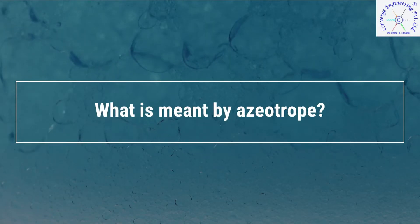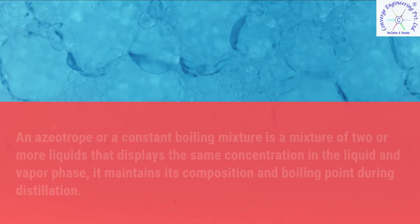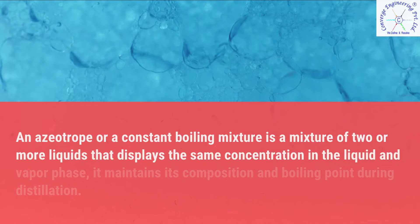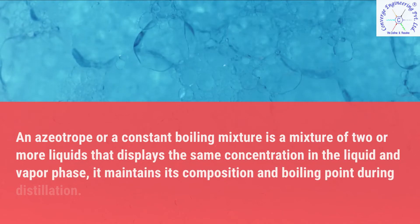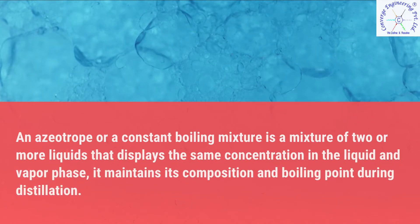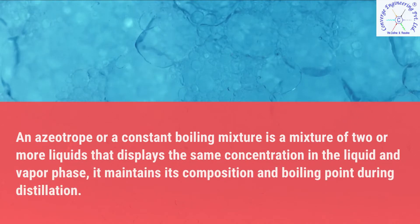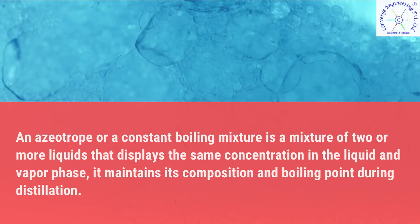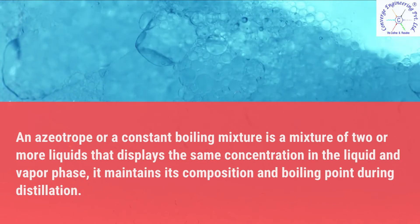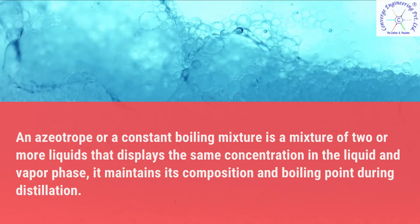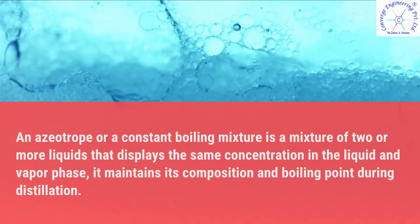What is meant by azeotrope? An azeotrope, or a constant boiling mixture, is a mixture of two or more liquids that displays the same concentration in the liquid and vapor phase. It maintains its composition and boiling point during distillation.